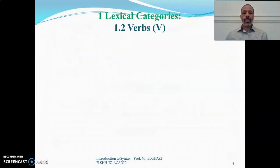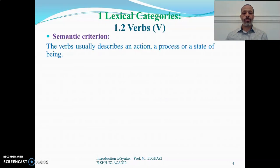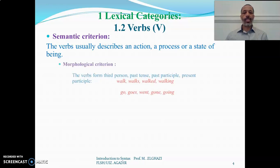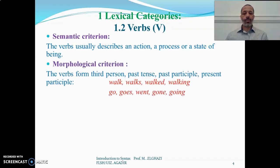The following lexical category is the verb. At the semantic level, verbs usually describe an action, a process, or a state of being. Morphologically, verbs can be conjugated to the third person singular, past tense, past participle, and present participle. For example, 'walk' becomes 'walks', 'walked', and 'walking'. The verb 'go' becomes 'goes', 'went' (irregular), 'gone', and 'going'.